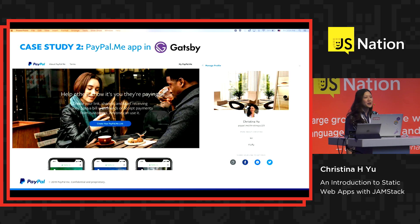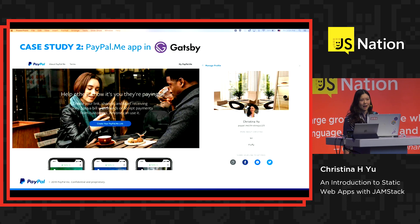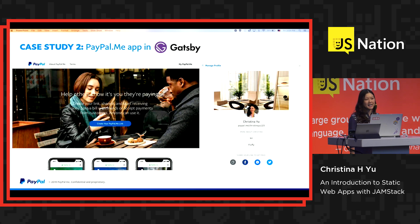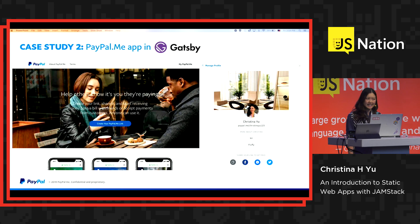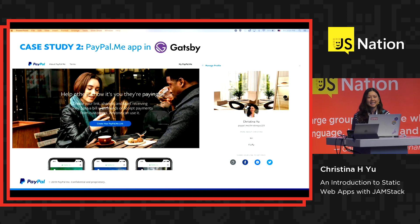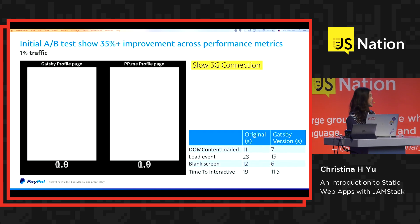Then we thought, how could we scale this so that more developers at PayPal can consider a JAMstack-like approach? This is where the Gatsby.js framework came in. Gatsby is a React-based static site generator that's tightly coupled with GraphQL. It has a lot of performance optimizations built in, like the prefetching of URLs, lazy loading of images, and so on. We decided to try it out on the PayPal Meet app, which requires authentication, so it's more representative of most of the apps we develop at PayPal.